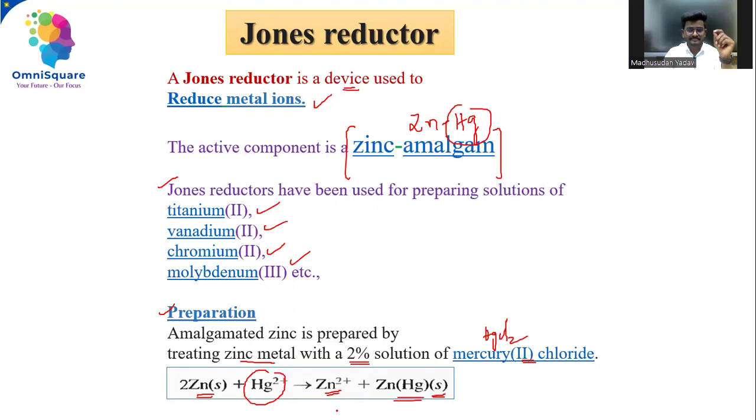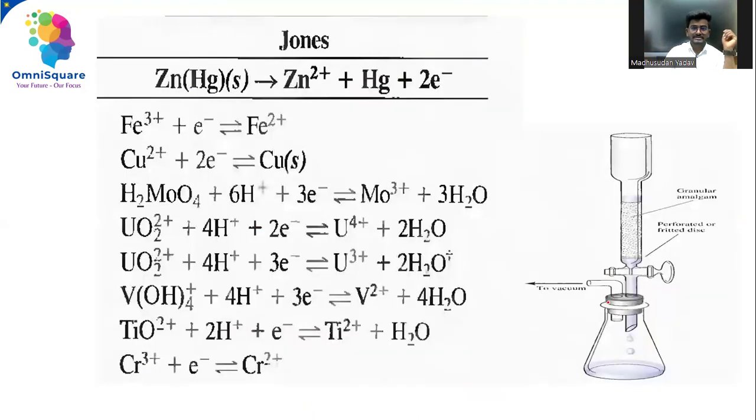On reaction with the zinc solids, it will give you zinc amalgam and the byproduct of zinc plus two. So what is the purpose of this? It reduces the matrix. Let's see how it will work. This is a Jones reductor diagram apparatus.